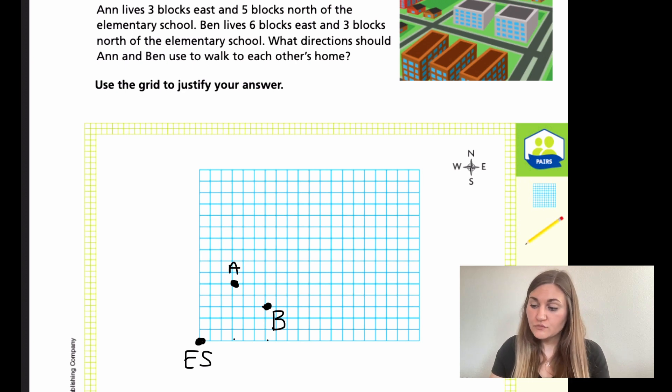So now it says what directions should Ann and Ben use to walk to each other's homes? Not from school, but from Ann's house to Ben's house and Ben's house to Ann's house. So Ann, I'm going to change her to red. She's going to go one, two, three to the east. So she's going to go three east or three to the right. Then she's going to go down one, two until she gets to Ben. And down is south, so then two south. And that's for Ann.